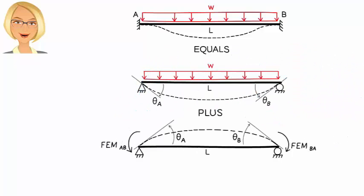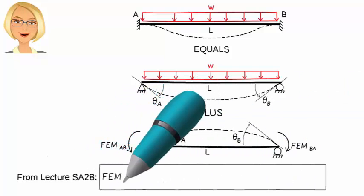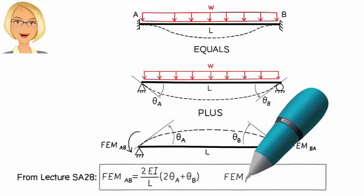Therefore, all we need to do here is to determine these moments given these known rotations. But how do we do it? Easily, using the slope-deflection equations for a load-free beam segment. I'm talking about these equations which we introduced in Lecture SA28.